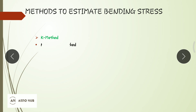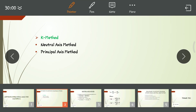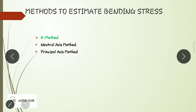The first method is the K method. The second one is the neutral axis method. The third one is the principal axis method. We have discussed the first one, the K method, and in this lecture we will be discussing the neutral axis method.